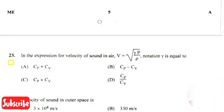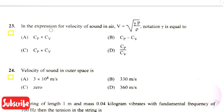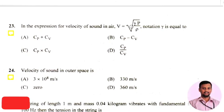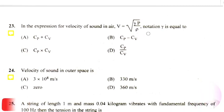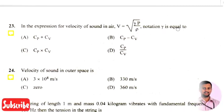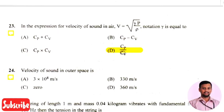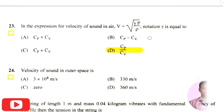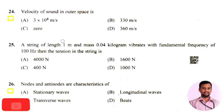The next question is: in the expression for velocity of sound in air, v equals root of gamma P divided by rho — the notation gamma equals the right answer is option four, that is cp divided by cv. cp and cv are the heat capacities at constant pressure and constant volume respectively, so gamma equals cp divided by cv.